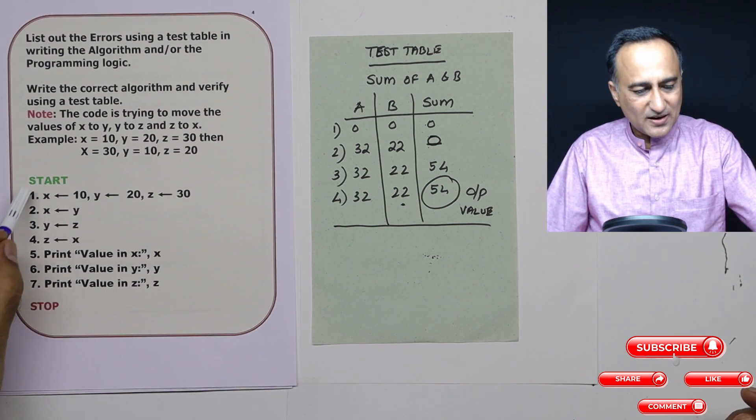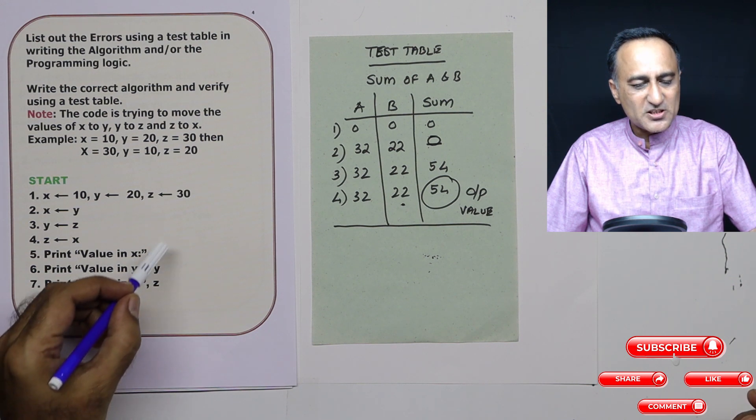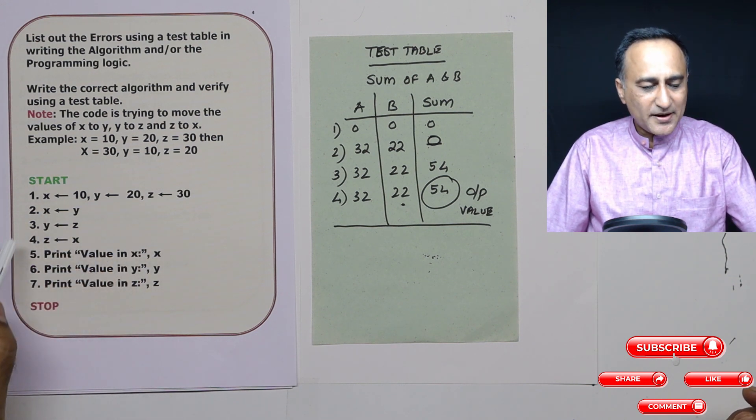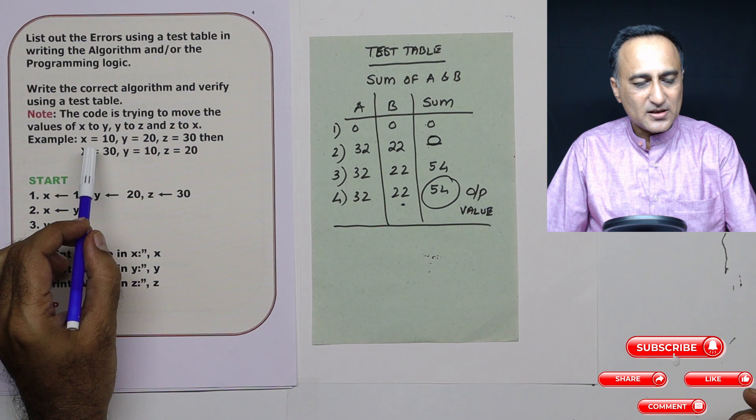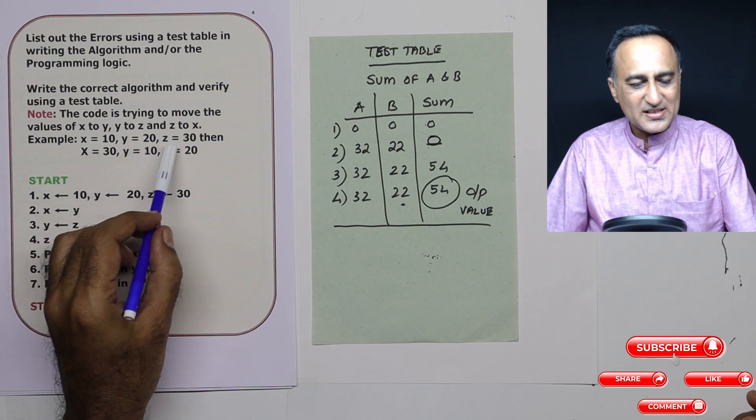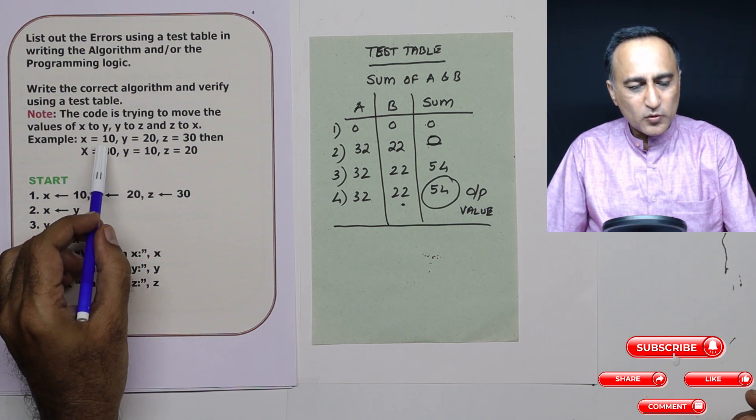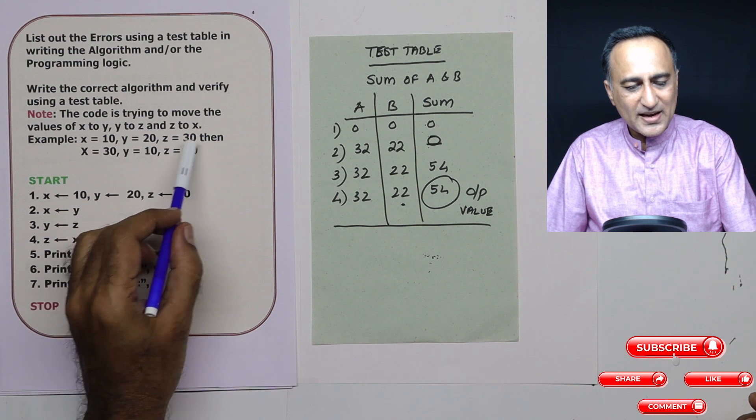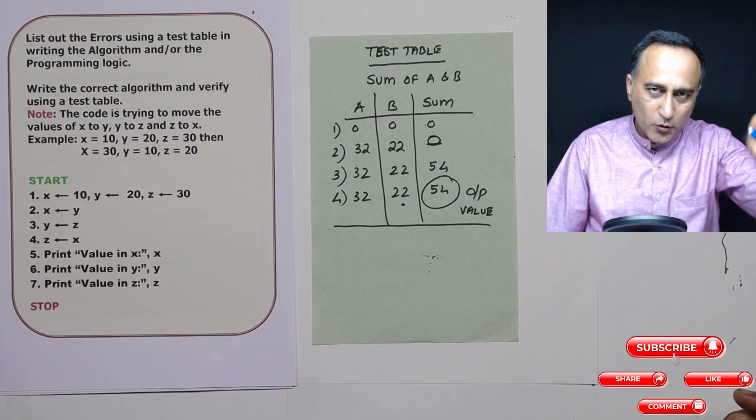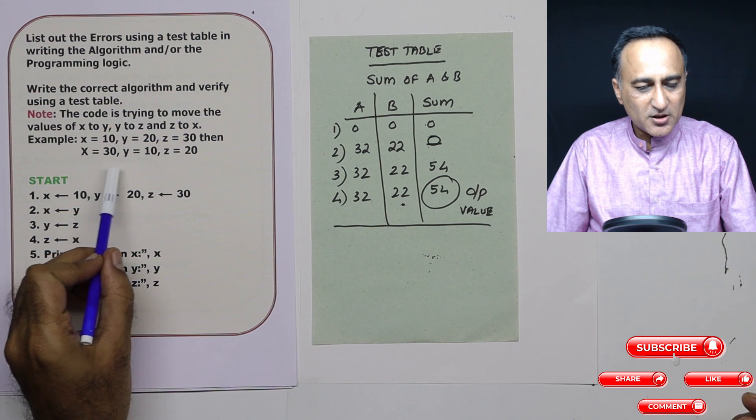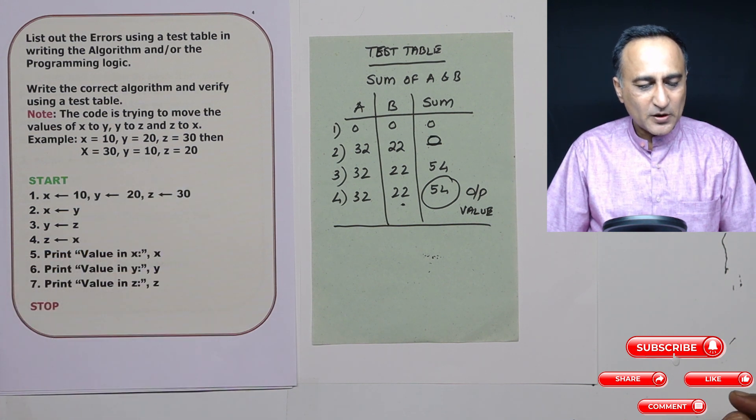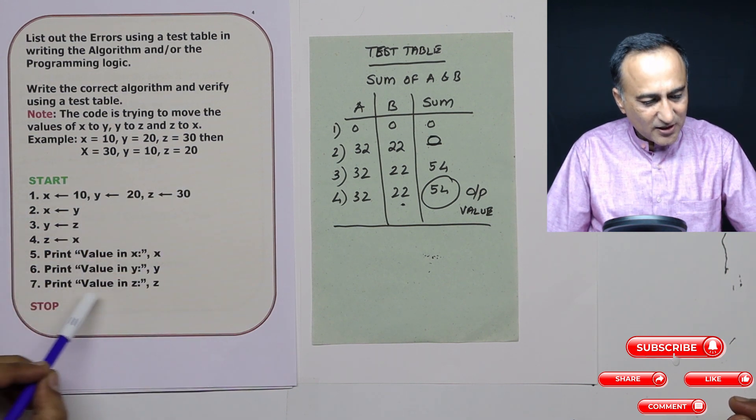What I have done is here I have written some algorithm, which is definitely not correct. What I am trying to do in this algorithm logic is suppose I have x as 10, y as 20, z as 30. I want to move the value of x to y, y to z and z to x. That means I'm trying to go into a circle. So x will be 30, y will be 10 and z will be 20. So for that I have written a logic.